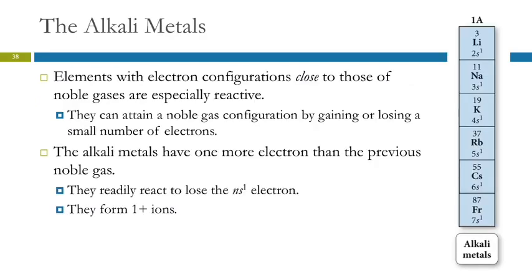That's why all of the alkali metals will have a one plus charge when they become ions. Because when they lose that one electron, they have a noble gas electron configuration, which is extra stable.